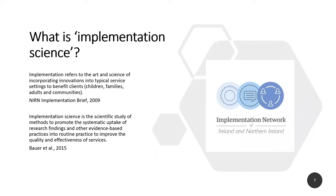Bauer defines implementation science as a scientific study of methods to promote the systematic uptake of research findings and other evidence-based practices into routine practice, to improve the quality and effectiveness of services. It's systematic, evidence-based, and it improves quality and effectiveness. However, having an effective policy or intervention is only part of the picture. How well a service or policy is implemented will also influence what it achieves. Implementation science builds on related disciplines including change management, improvement science, quality improvement and project management, and also helps to understand context — including organizational, community, political, economic or social settings.